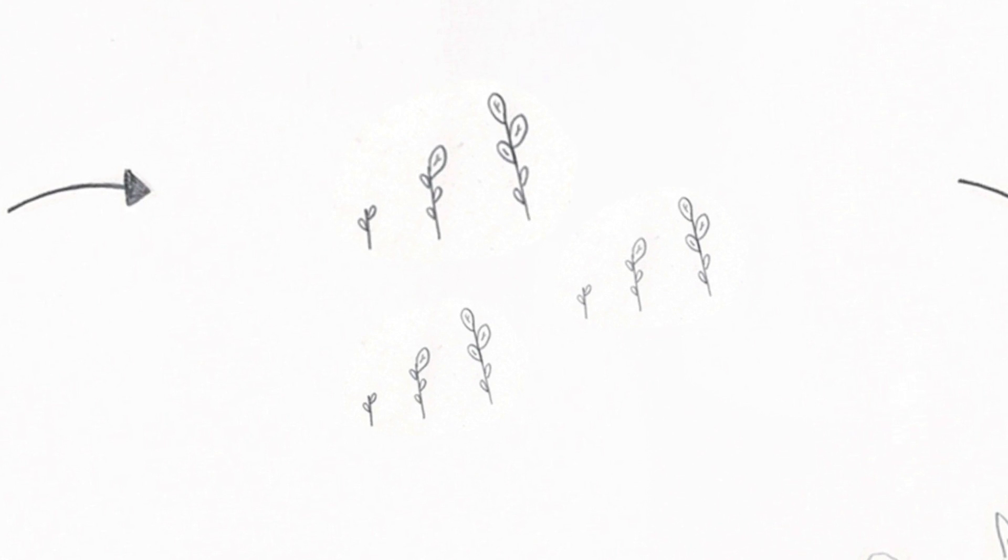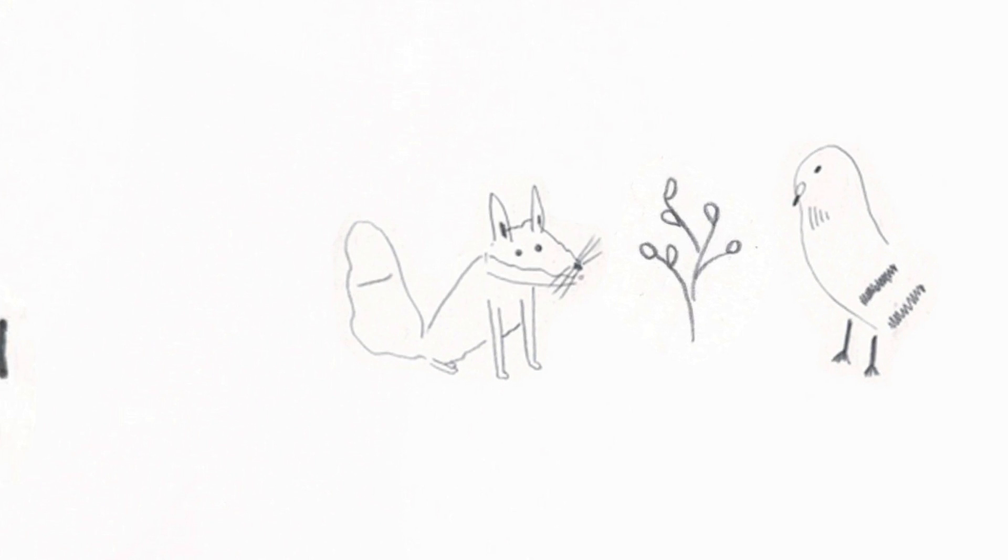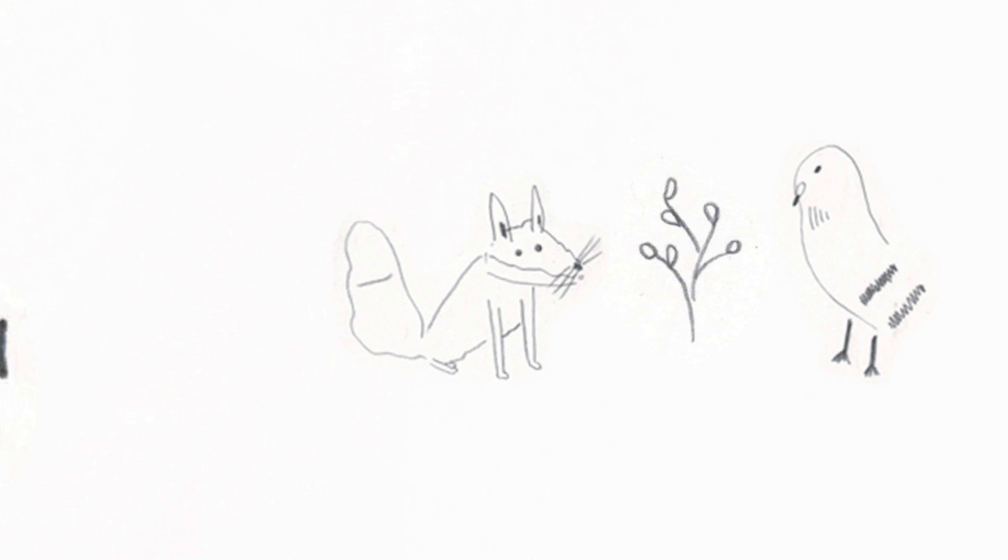Plants absorb this carbon dioxide to make food and oxygen during photosynthesis. Animals eat the plants and breathe out the carbon as carbon dioxide.